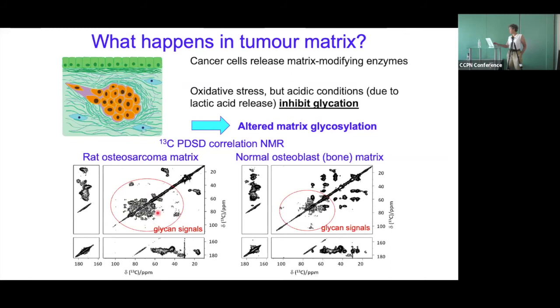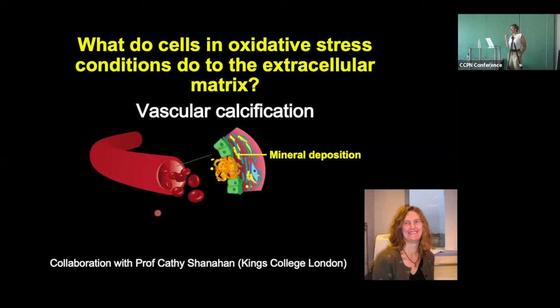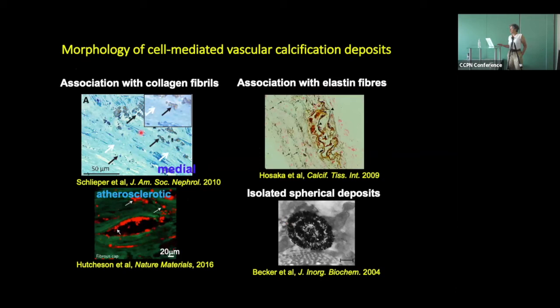Another thing cells do when they get really upset is calcify the matrix. In vascular calcification you get calcification both of the intimal layer of arteries as a result of atherosclerosis and cell necrosis, and in the medial layer — the elastic layer — primarily around the collagen fibrils and elastic laminate. Medial calcification is typically associated with ageing and diabetes. In the medial calcification you typically get calcification of collagen fibrils, with mineral aligning around and within the collagen fibrils; in atherosclerosis it deposits as random huge plaques where collagen has been depleted.